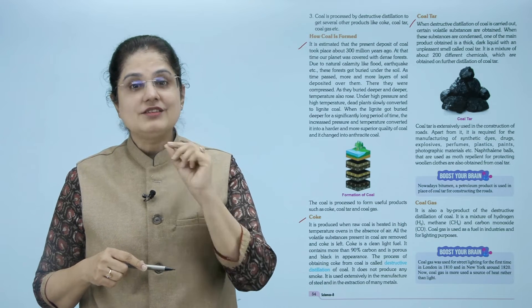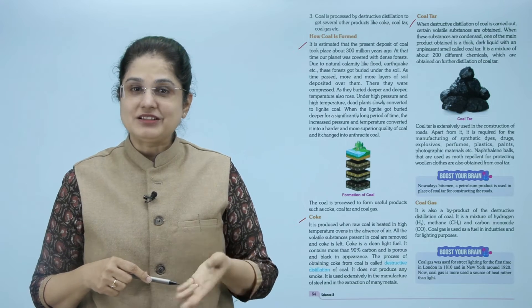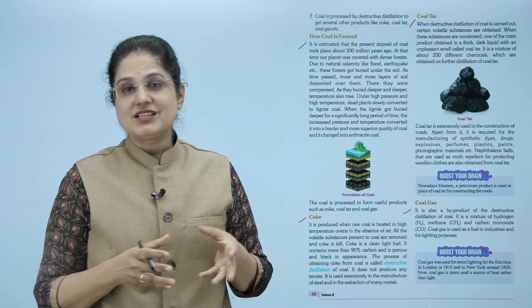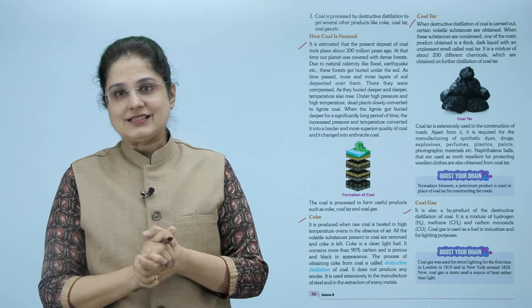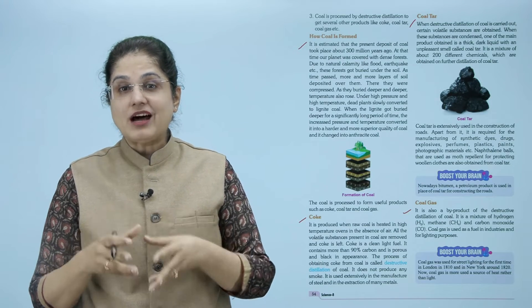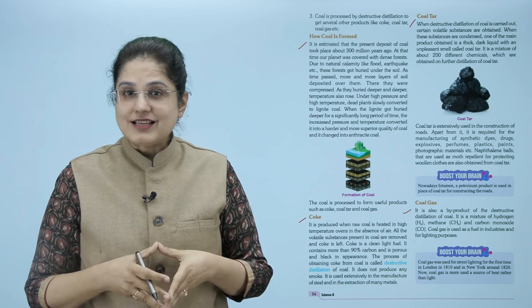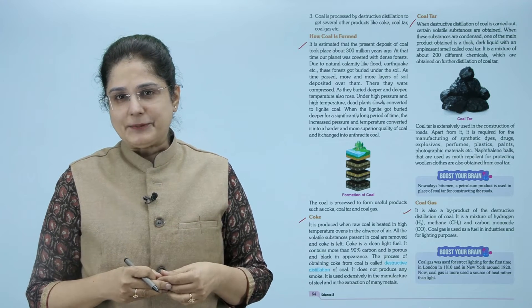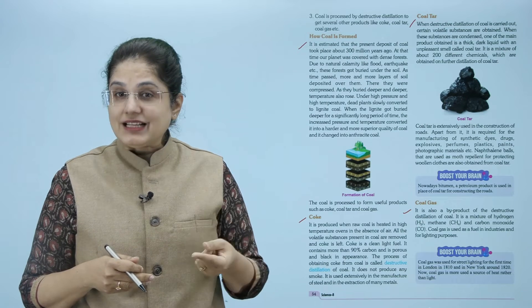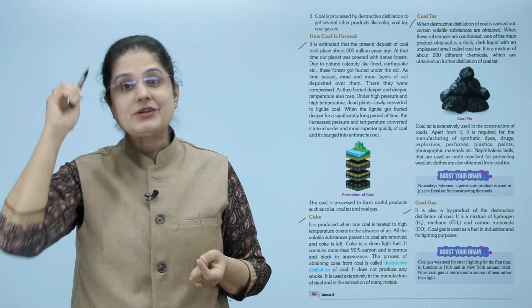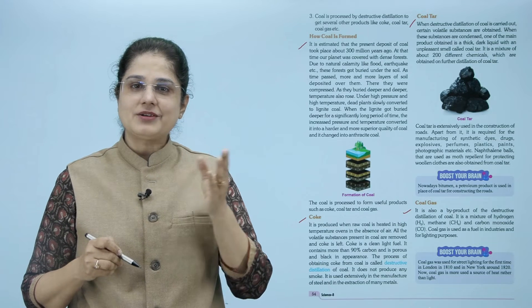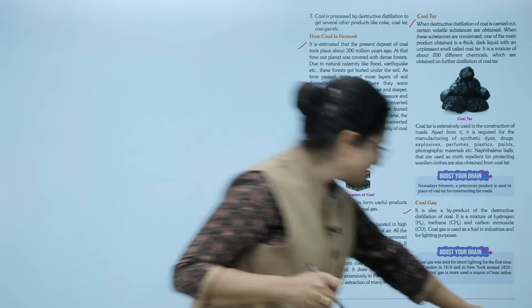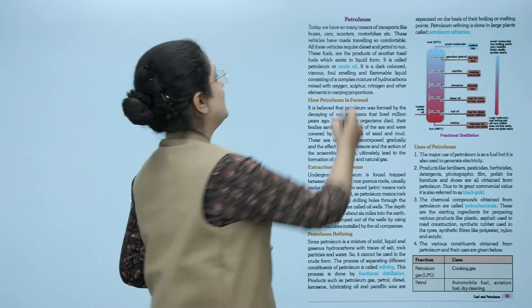Now let us look at coal gas। Coal की destructive distillation का by-product है coal gas। यह hydrogen, methane और carbon monoxide gases का mixture है। Coal gas को fuel की तरह industries में और जलाने के purposes के लिए use करते हैं। Coal gas was used for street lighting for the first time in London in 1810 and in New York around 1820. Now coal gas is more used as a source of heat rather than light।